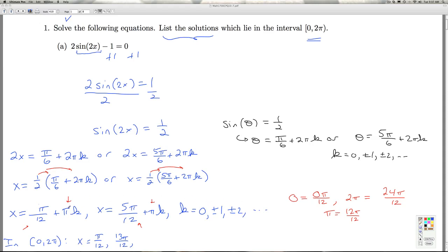If I plug 2 in, then I'm adding π/12 plus 24π/12, and that's more than 2π. So the two answers I get from this family are π/12 and 13π/12.